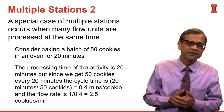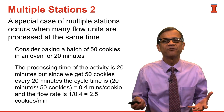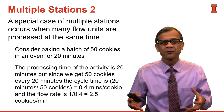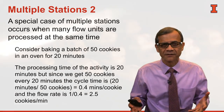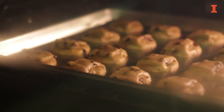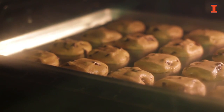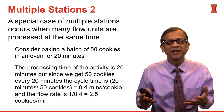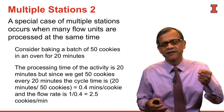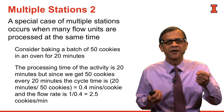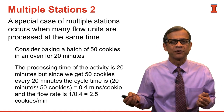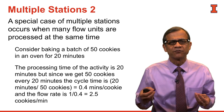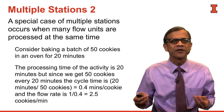A very special case of multiple stations is batch processing. Suppose we have to bake 50 cookies at a time in the oven for 20 minutes. The cycle time is 20 divided by 50, which is 0.4 minutes per cookie. And the flow rate is the reciprocal of the cycle time — one over 0.4 — giving us 2.5 cookies per minute.